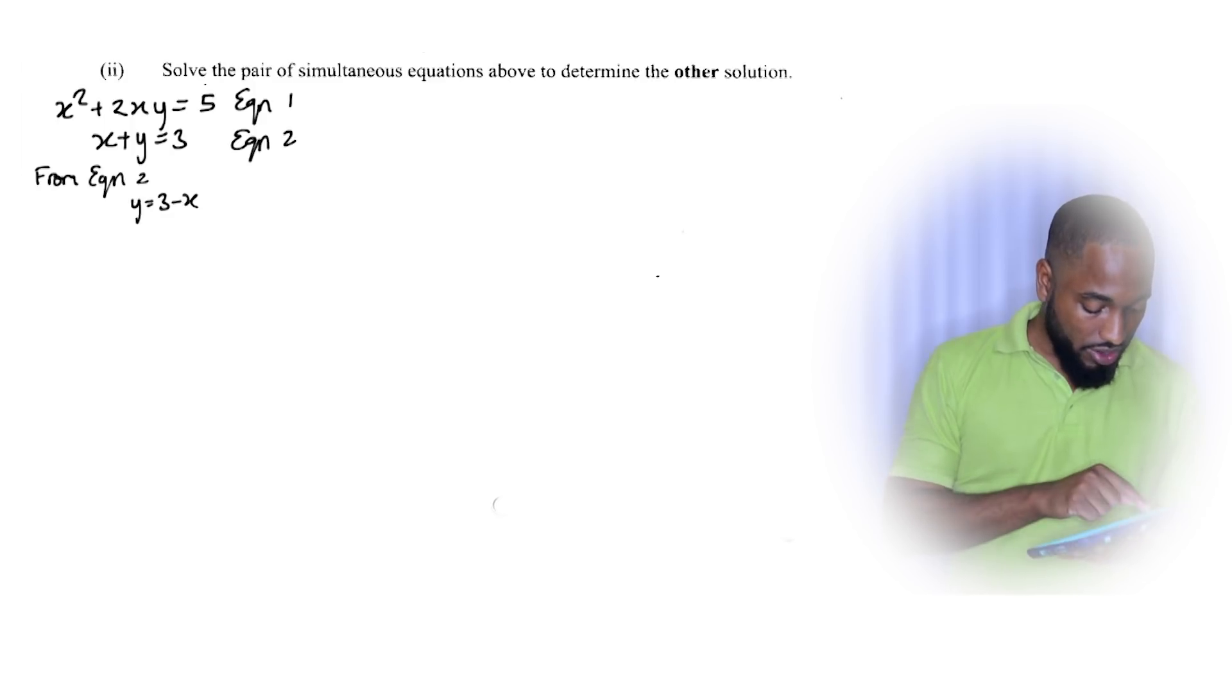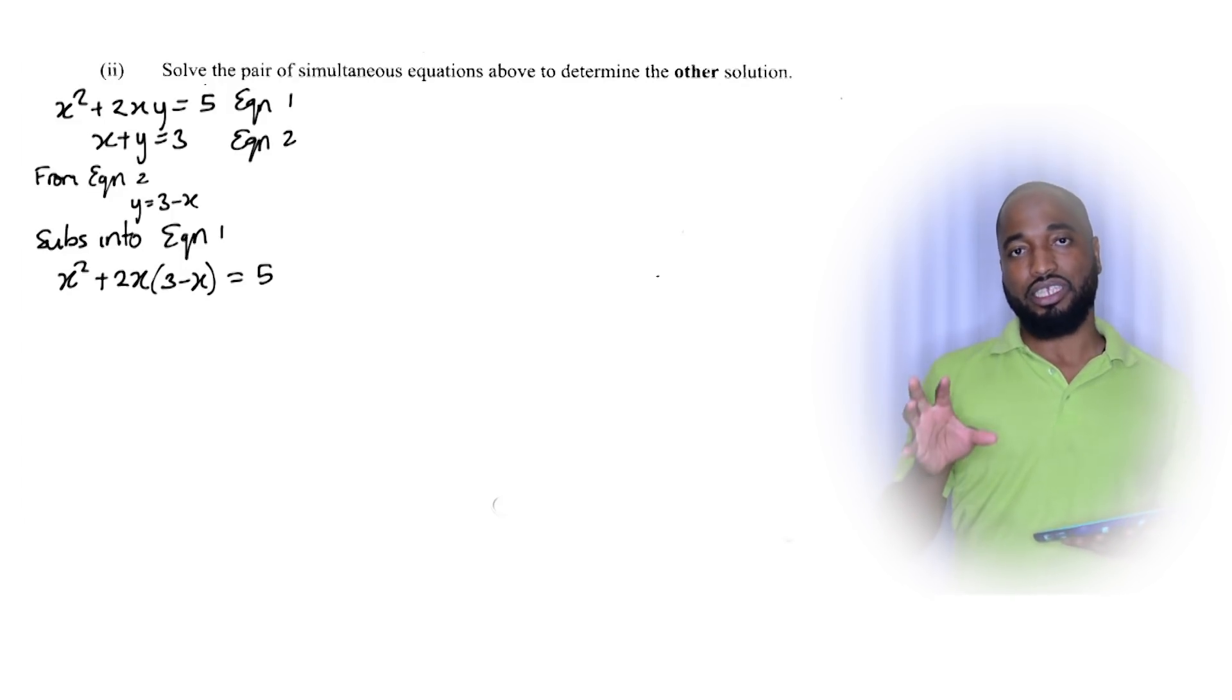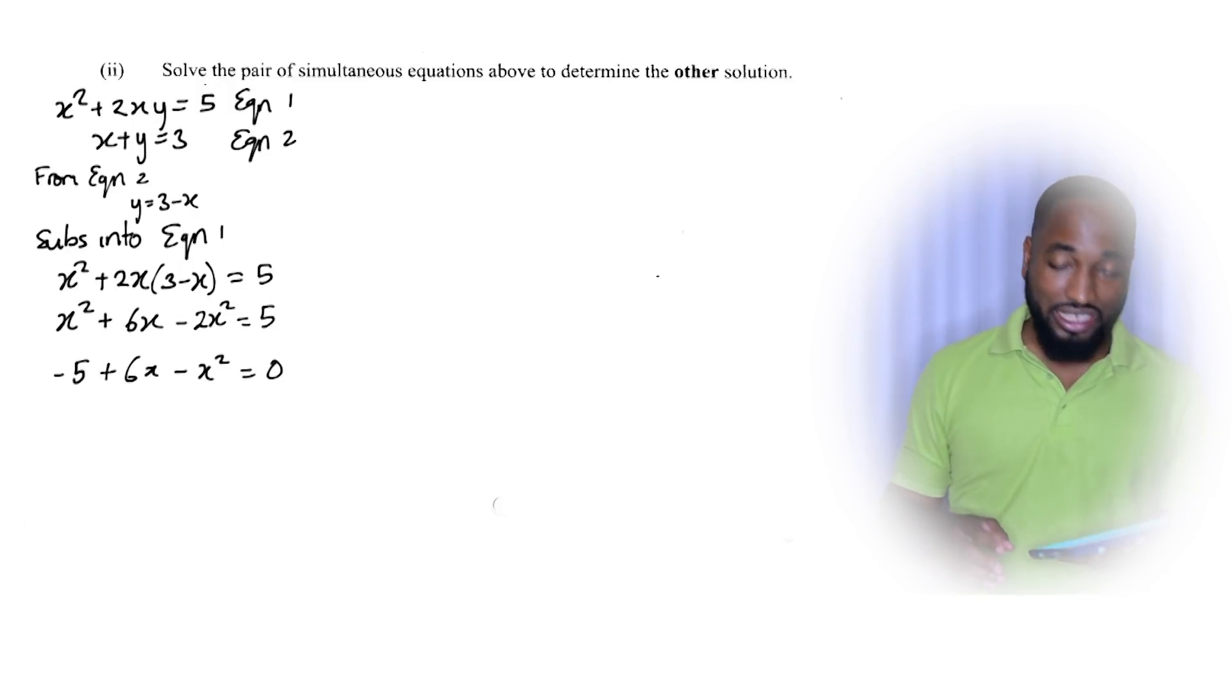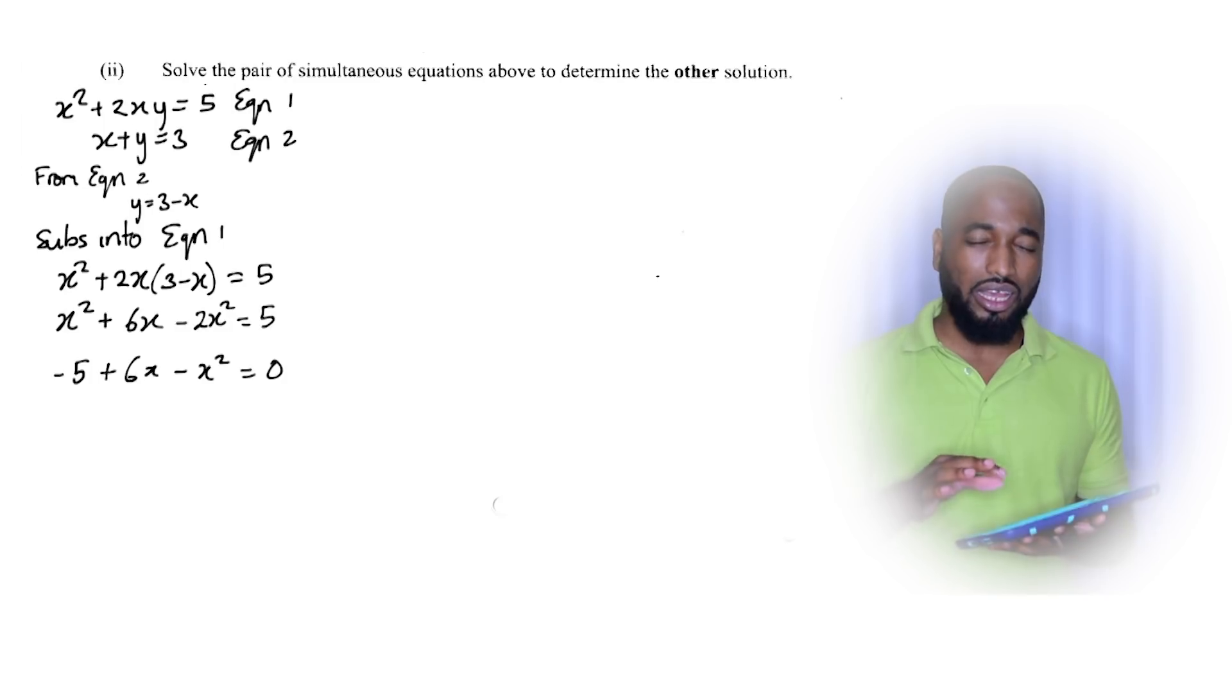Establish which is which. From equation 2, which is the linear equation, I'm going to make y the subject of the formula because I'm about to do some major substitution. Substitute y = 3 - x into equation 1. So anywhere I see y I'm going to put 3 - x. You understand? Linear into non-linear. When I do that I will get a nice substitution line here - this has replaced the y. And now I'll break that down and very likely you will get a quadratic equation.